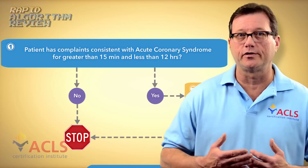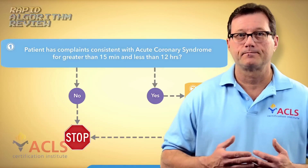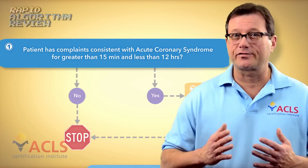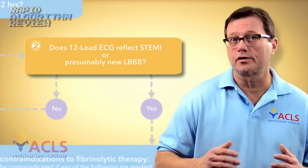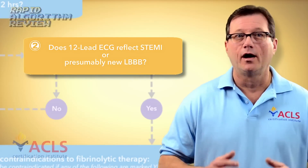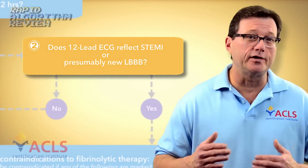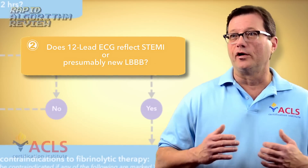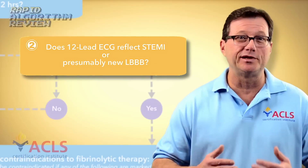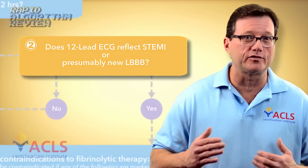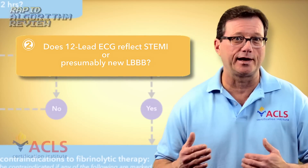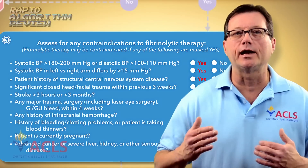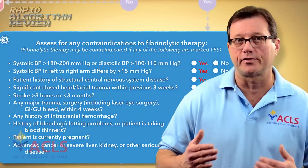First, the patient presents with signs of acute coronary syndrome. Next, get a 12-lead EKG — take a closer look at that heart. Are they having an ST-segment elevation MI, or a new or presumably new left bundle branch block? We need to get them to the cath lab. Can't get them to the cath lab? We've got to look at fibrinolytic therapy, so let's go through our exclusion list.